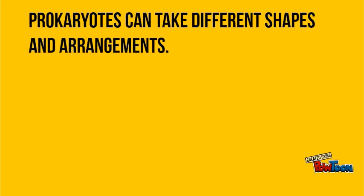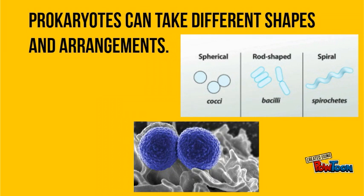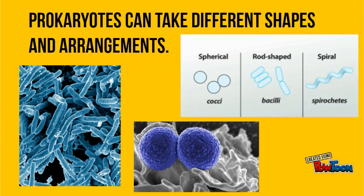Prokaryotes come in a variety of shapes: spherical, rod-like, or spiral. Prokaryotes can also exist as pairs, clusters, or chains of cells. Scientists often use the shapes and arrangements of prokaryotes to help identify the species.